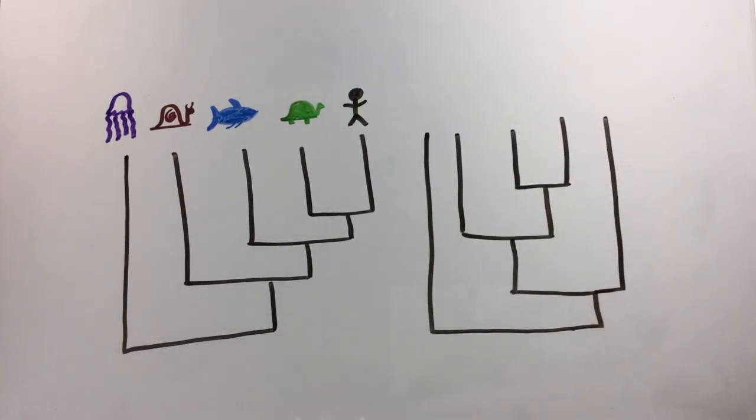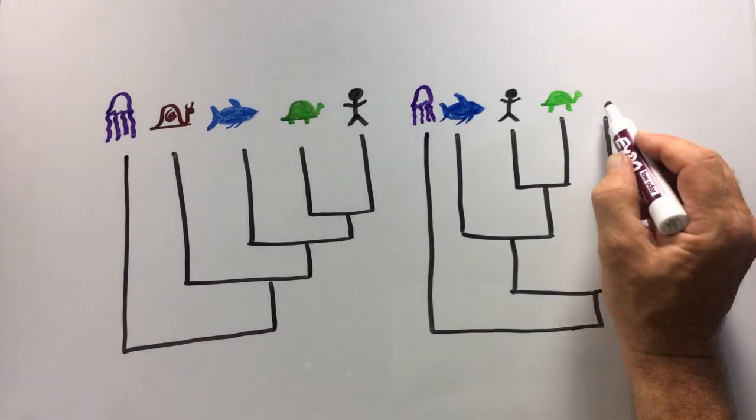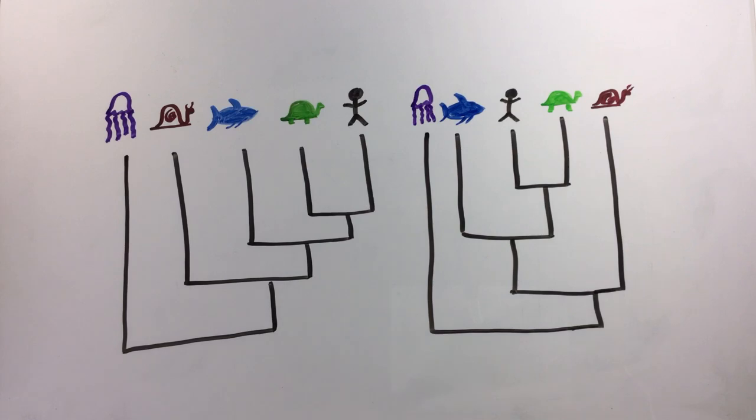Here's another tree. Does it indicate a different relationship among these five species? The correct answer is no. Both trees show exactly the same relationships despite the node rotations.